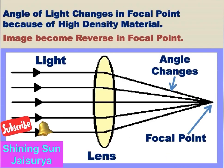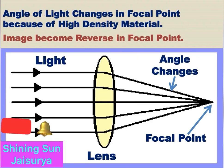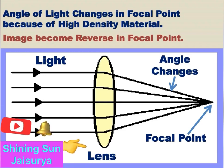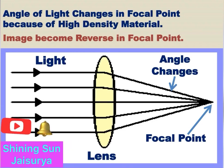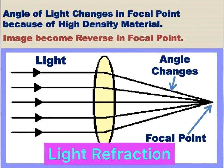In general, light will get deflection or bend while it crosses through a high density material like a lens. This bend happens at a particular center point which is called the focal point. This action is called light refraction.